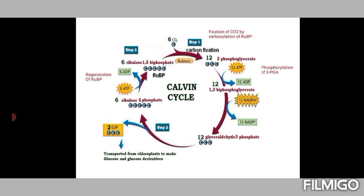Out of the 12 molecules of glyceraldehyde 3-phosphate, two are used for condensation (Step 2): six carbon molecules give rise to a six-carbon compound forming fructose 6-phosphate and other glucose derivatives, as well as sucrose and other carbohydrates. The remaining 10 molecules are used for the regeneration of RuBP, maintaining the cyclic process.